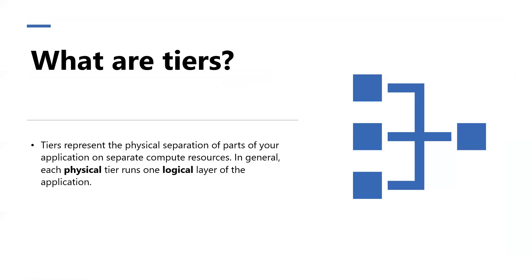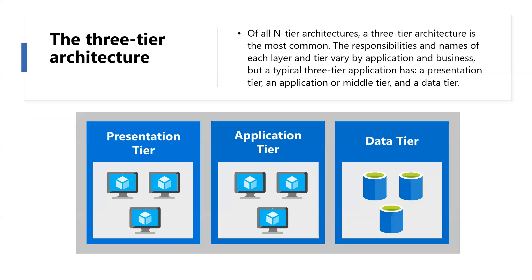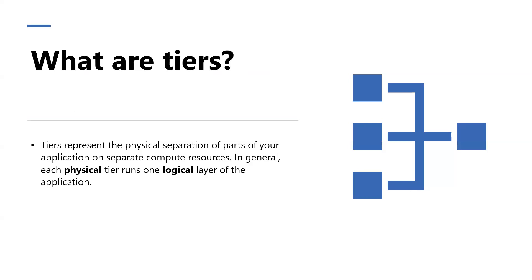What are tiers? Tiers represent the physical separation of parts of your application on separate compute resources. In general, each physical tier runs one logical layer of the application. Separating the architecture into physical tiers comes with several benefits: application components can be scaled separately by adding resources to each tier, the application can be more resilient by adding load balancing to detect failed resources and redirect requests to healthy systems, and the application can be more secure by restricting network communication between tiers and only allowing the access that is required.